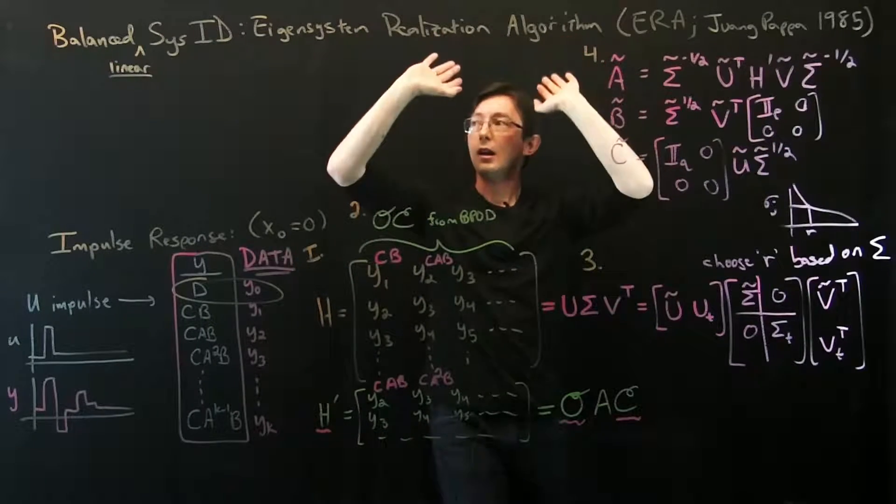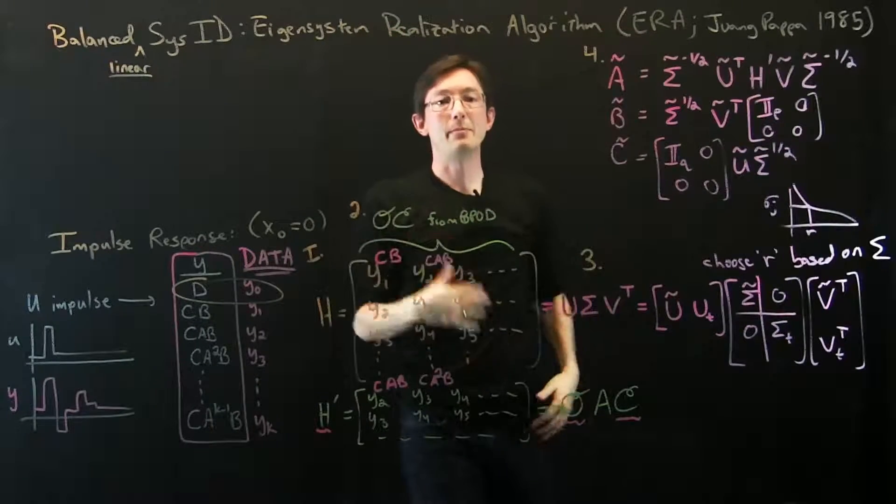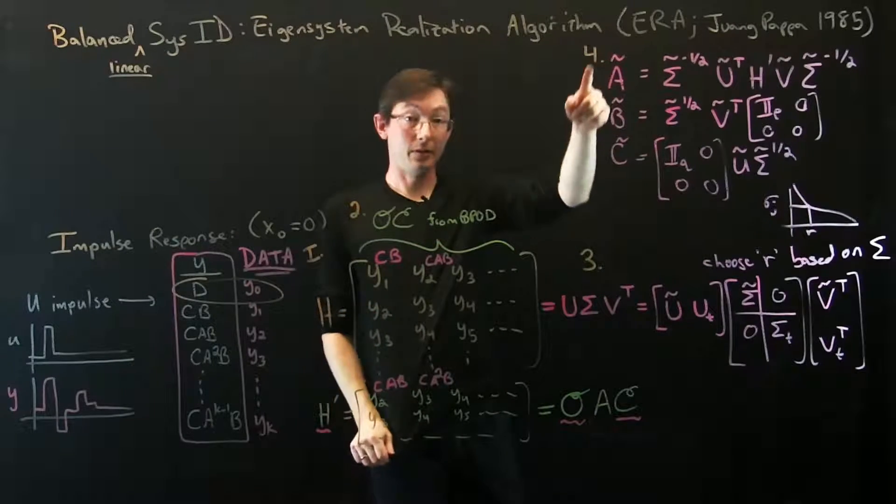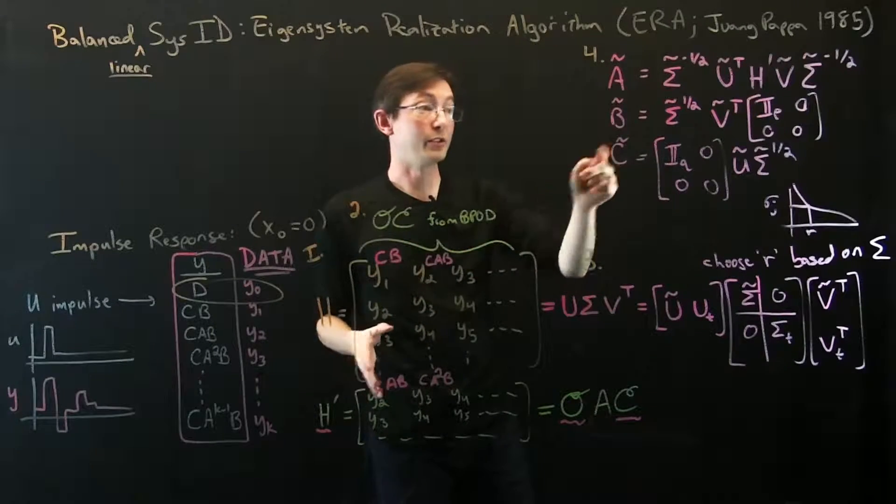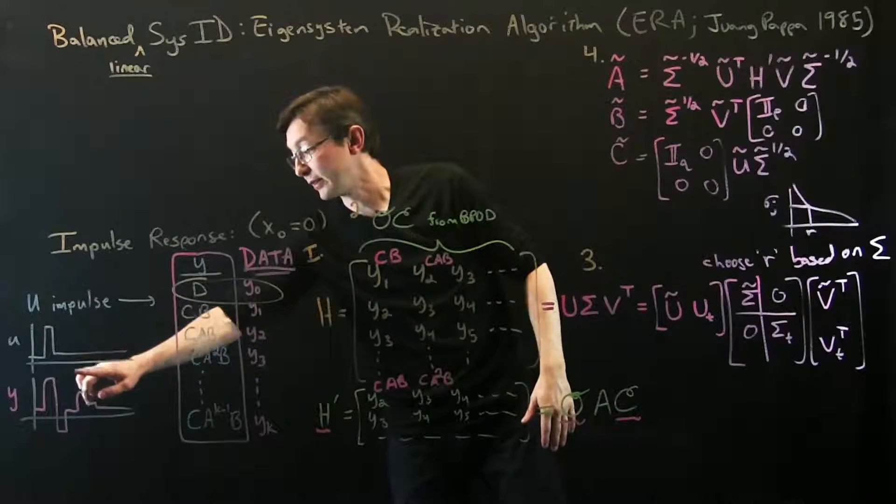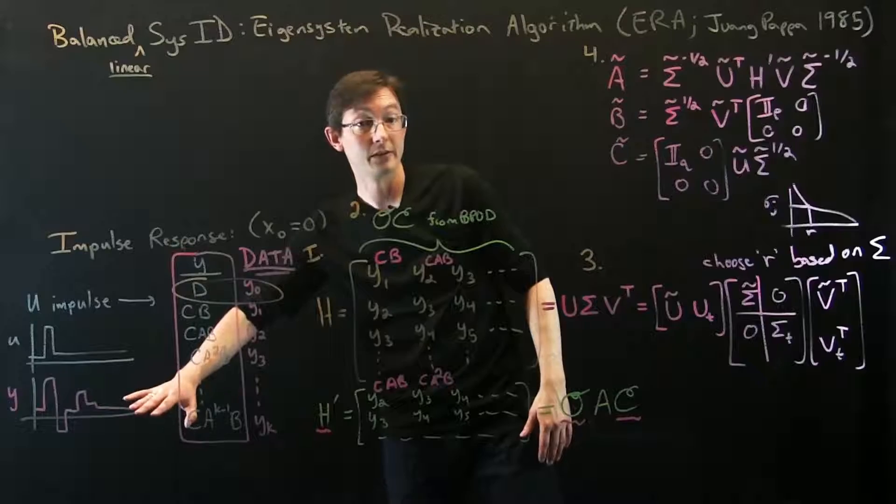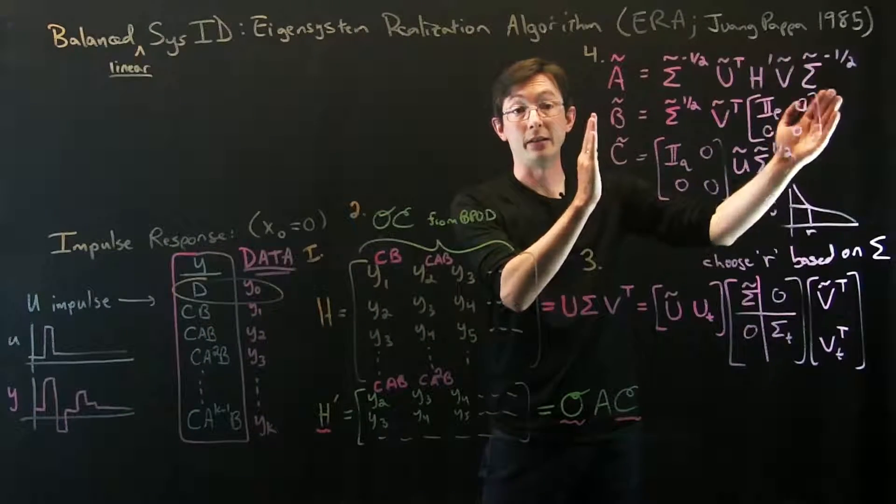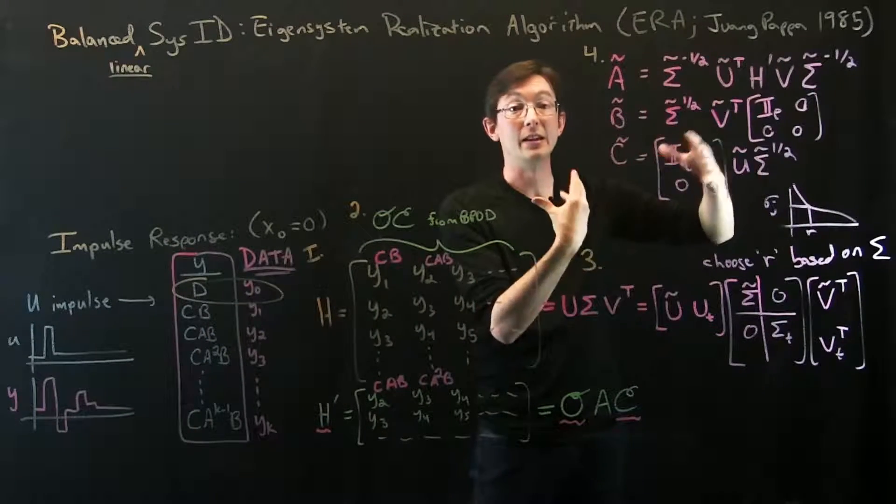This is connected to balanced model reduction. It turns out that based on a symmetry of the Hankel matrix, these are inherently balanced models. If you collect enough data, if you collect this long enough that all the tails of this die out, these will be balanced models. The Grammians will be approximately equal and diagonal in these coordinates, which is really cool.